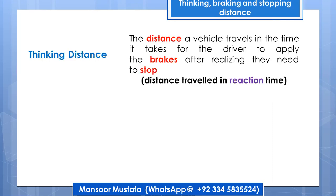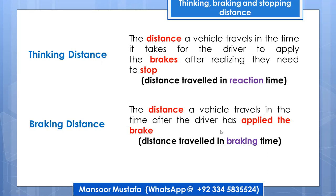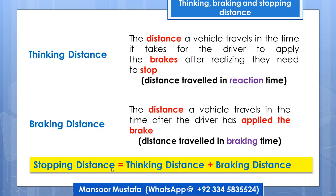Now let's define these terms properly, as you may be asked to define them in exams. Thinking distance is the distance a vehicle travels in the time it takes for a driver to apply the brake after realizing they need to stop — the distance covered during reaction time. Braking distance is the distance from brake application until the vehicle completely stops. Combining thinking distance and braking distance gives the stopping distance.